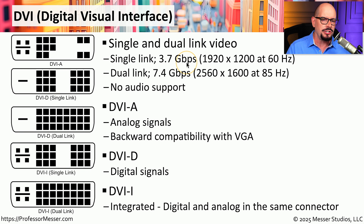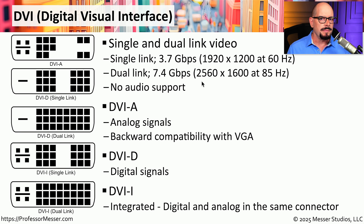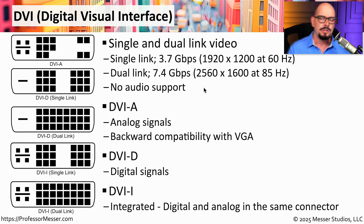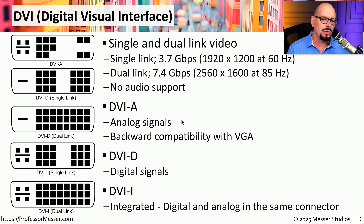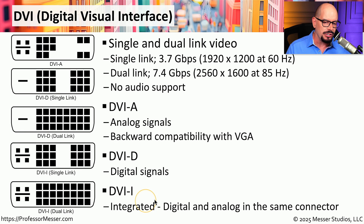A single link can transmit information at approximately 3.7 gigabits per second, which is able to support a traditional HD connection at 1920 by 1200 resolution. Unlike HDMI and DisplayPort, which send both audio and video, a DVI connection only sends video signals. You might also run into a DVI-A, which sends analog signals and is backwards compatible with VGA. DVI-D connectors send digital information. A DVI-I, or DVI-Integrated connection, can send both digital and analog signals in the same connector.